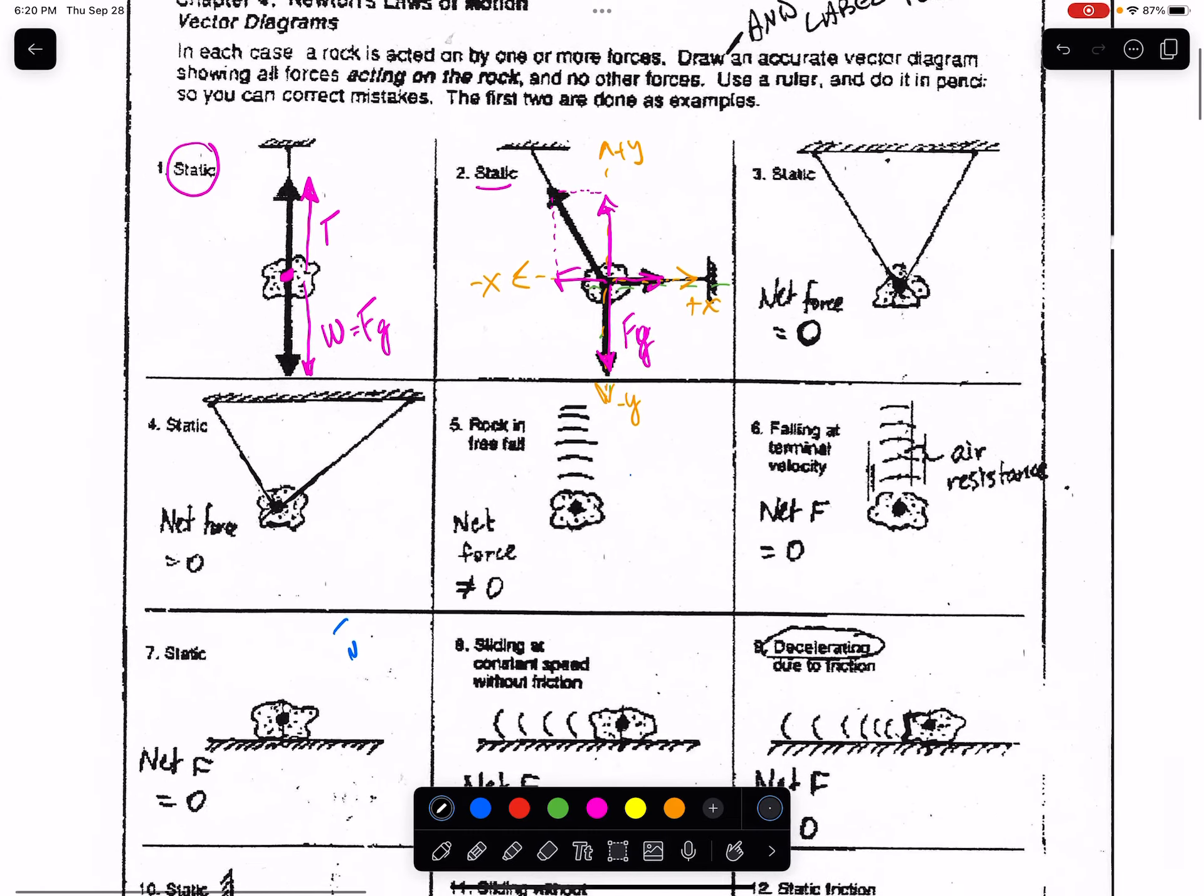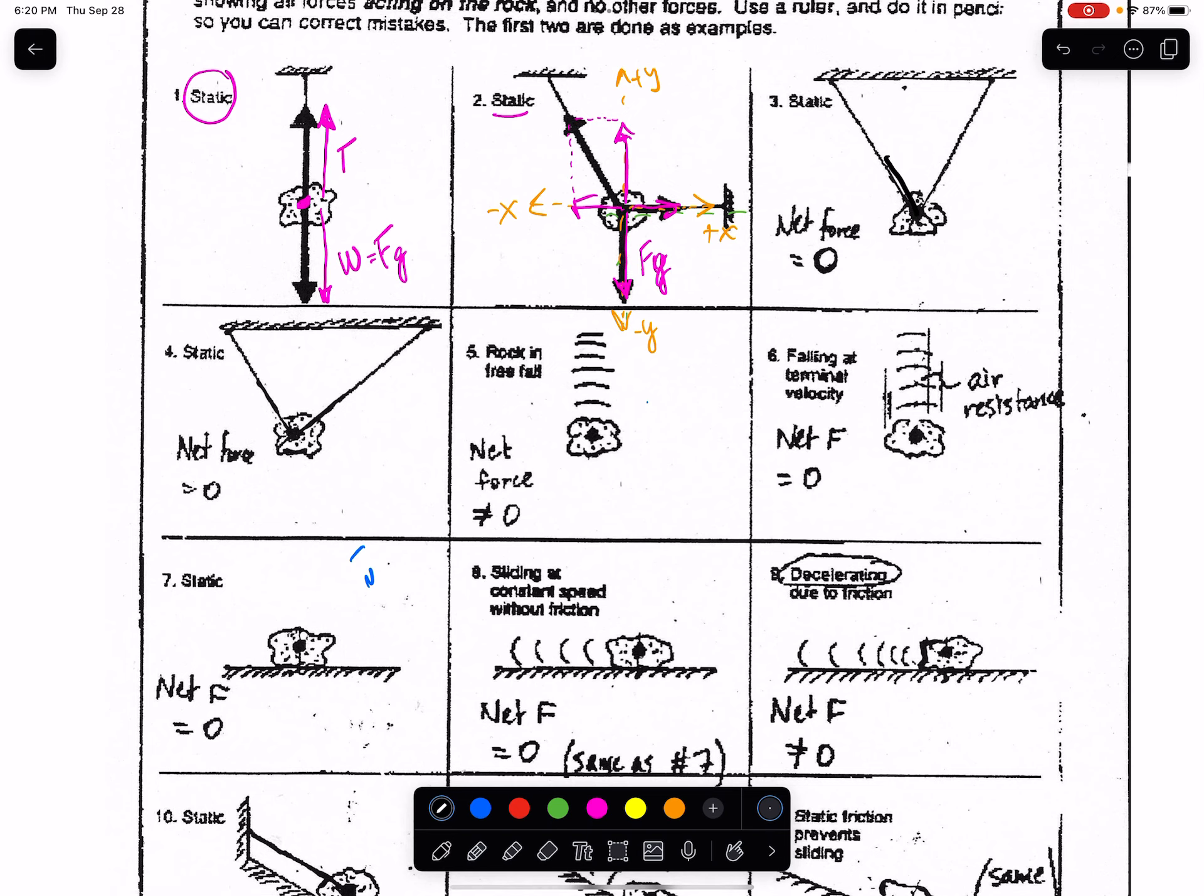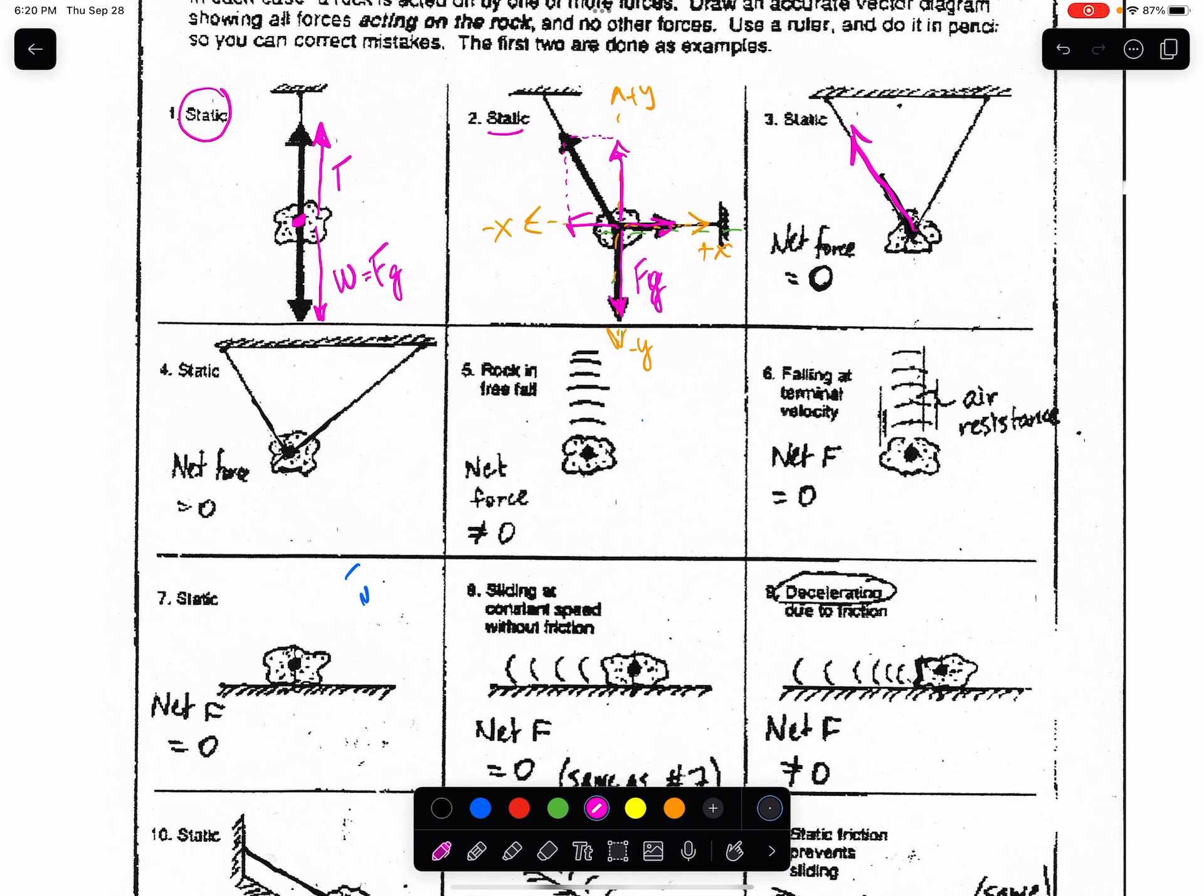If something touches your object like those two strings there has to be a force in it. There's a tension pulling that way, there's a rope so a tension pulling that way, and you still have your weight straight down. Weight is one of the four forces that work at a distance, gravitational force. You don't have to be sitting on the couch to have weight. However those two strings are touching that rock so I'm going to label this tension one and this tension two. This is called drawing the free body diagram which is the start to getting from the word problem to the actual math.